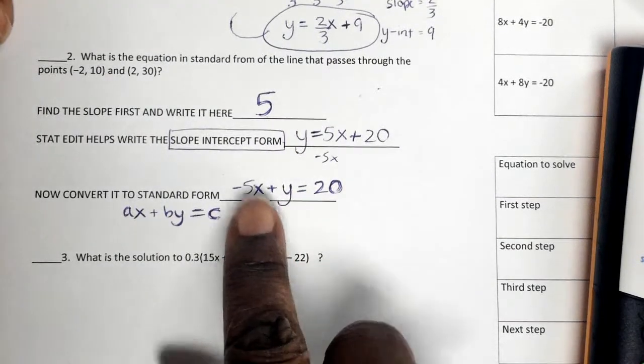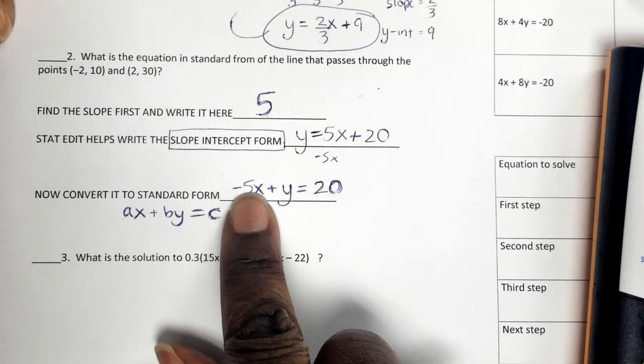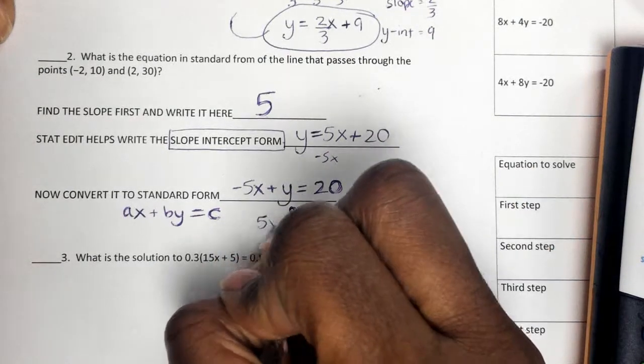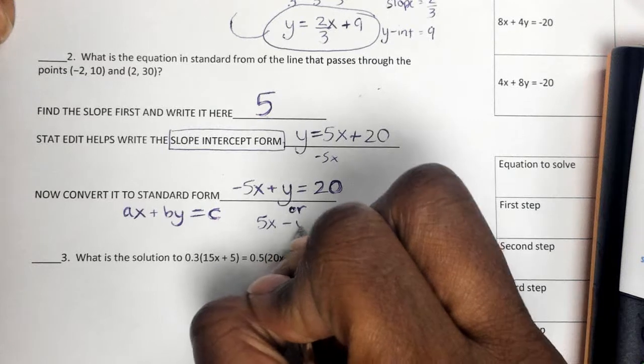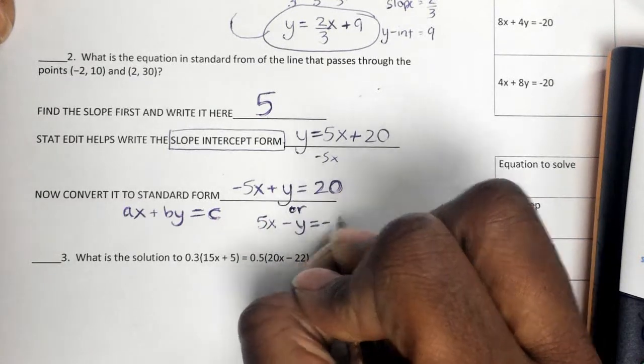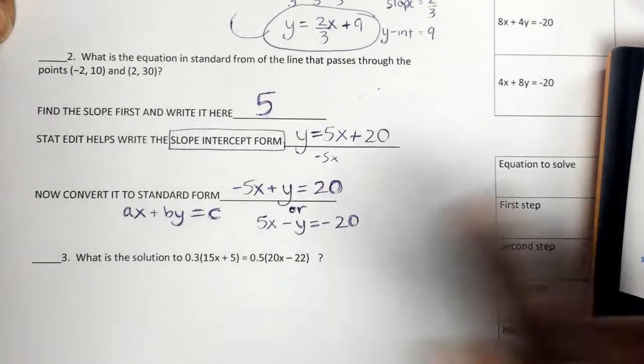The only hiccup with the standard form is you're not supposed to have a negative x value. So they could write it like this, or they could flip all the signs and now say, okay, that's positive 5x, that's negative y, or minus y, and now the 20 is a negative 20. So either one of these could be correct for standard form.